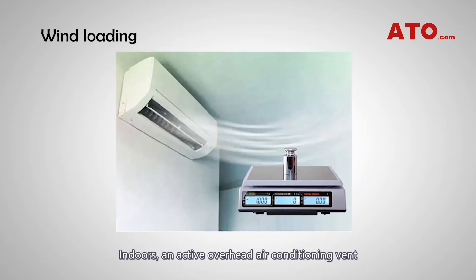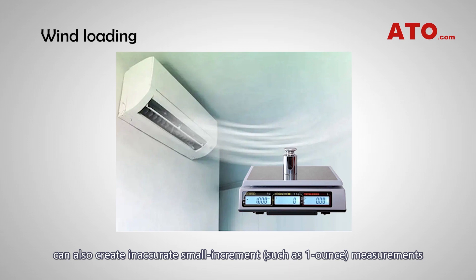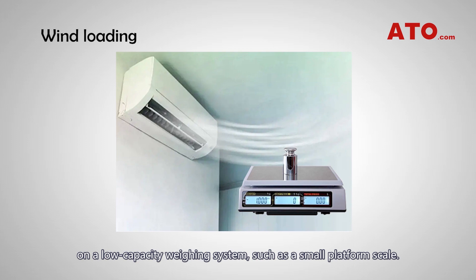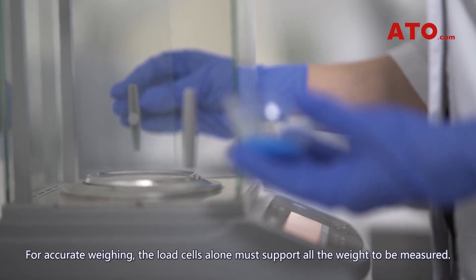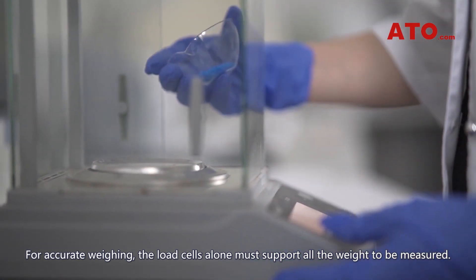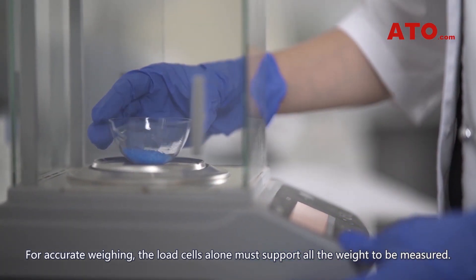Indoors, an active overhead air conditioning vent can also create inaccurate small increment measurements — such as one ounce measurements — on a low-capacity weighing system such as a small platform scale. You can use a plexiglass cover over the platform scale to block or divert the stray air currents. For accurate weighing, the load cells alone must support all the weight to be measured.